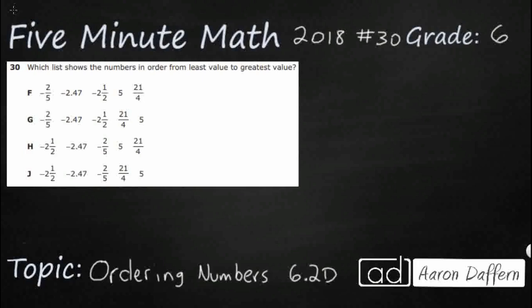Hello and welcome to 5-Minute Math. Today we are looking at the 6th grade concept of ordering numbers. This is standard 6.2D in the great state of Texas and we are using item number 30 off the 2018 released star test.